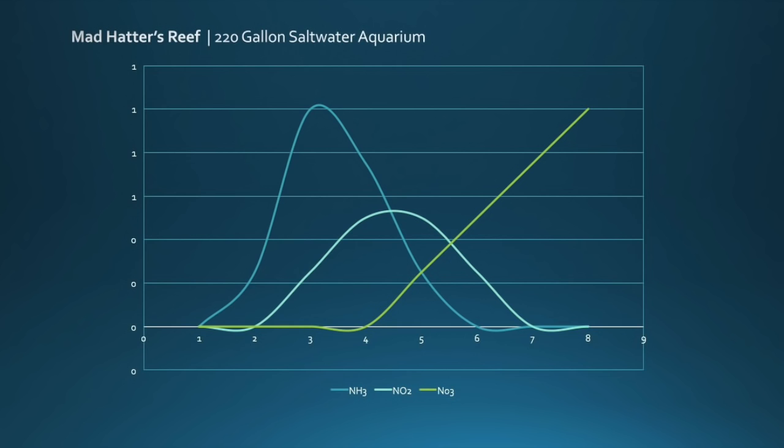Then you see the nitrate pick up and then just keep going. Now nitrate measures on a different scale so that's why that goes as high as it does. But overall this tank was completely cycled in seven days - you're talking about almost 300 gallons of water cycled within seven days. Dr. Tim's Aquatics One and Only just continues to amaze me and I was impressed when I cycled my 5 gallon, my 40 gallon, and 300 gallons still impressed.